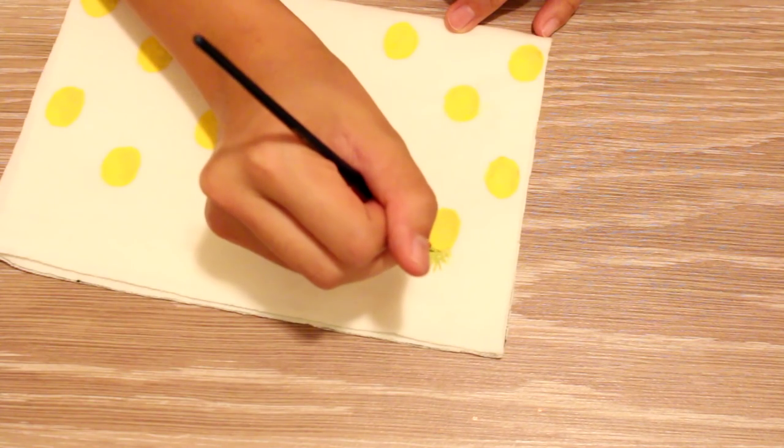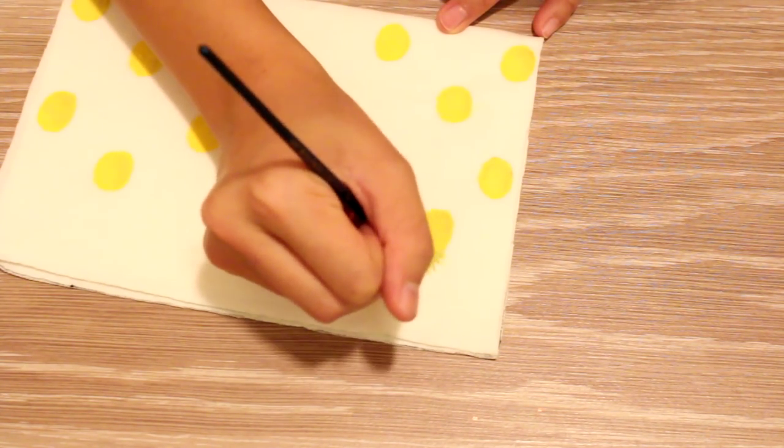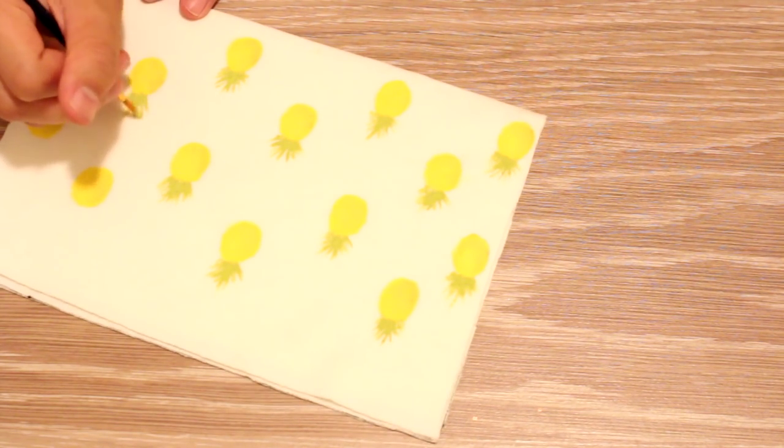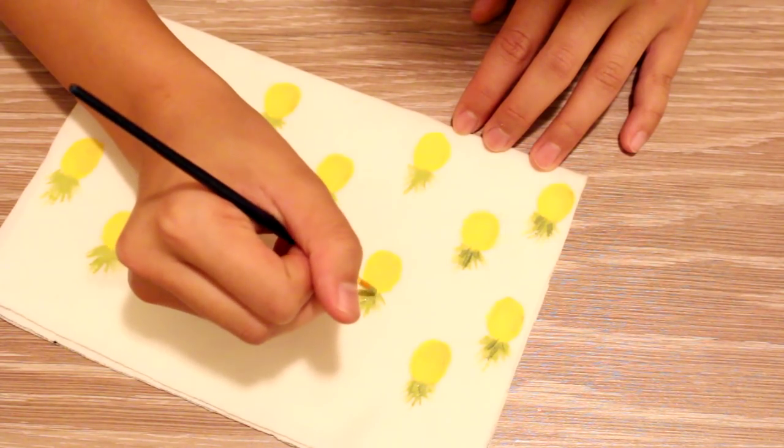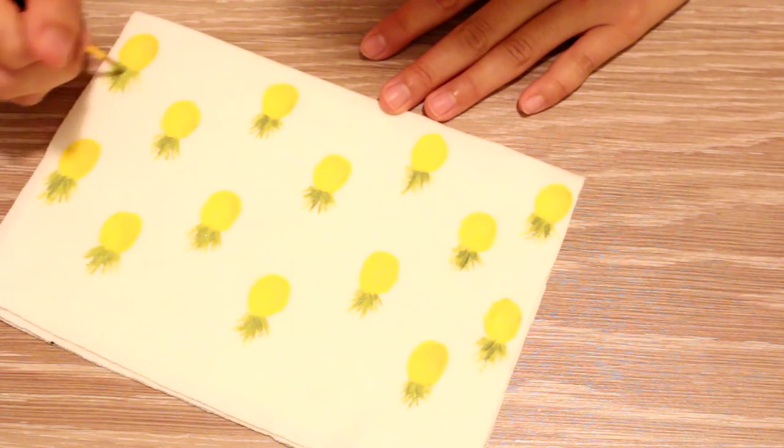To make the pineapple leaves, I used some light green acrylic paint. Starting from the top of the yellow pineapple as your base, draw outwards with your brush in a flicking motion. This technique makes the leaves look more natural and organic. Using the same method, I took some dark green paint and drew the leaf shadows. This adds more dimension to your pineapple.